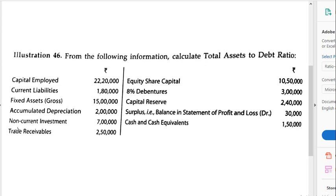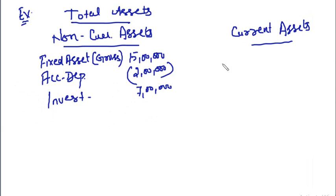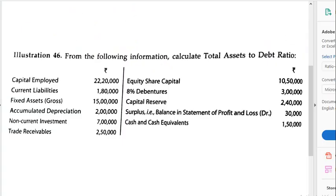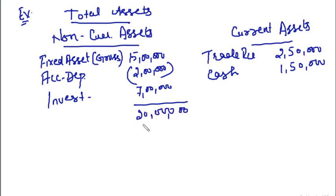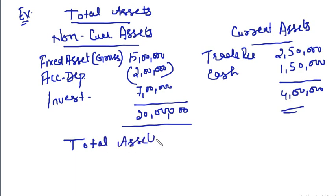Trade receivables 2 lakh 50,000 — it is a current asset. Equity share capital, 8% debentures, capital reserve, surplus — these are not assets. Cash and cash equivalents 1 lakh 50,000 — it is a current asset. So total non-current assets come to 20 lakhs (15 - 2 + 7), current assets are 4 lakhs, and total assets are 24 lakhs.